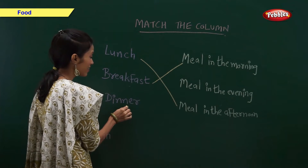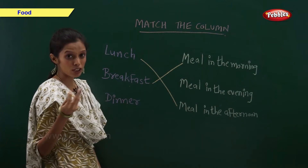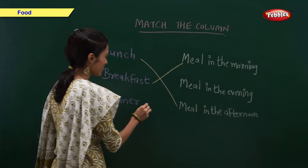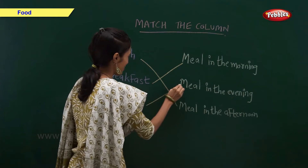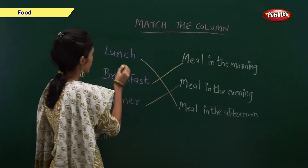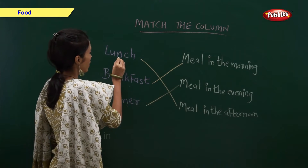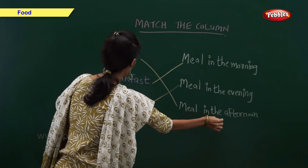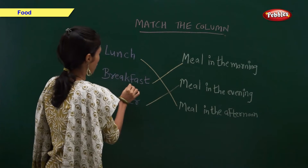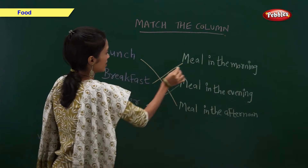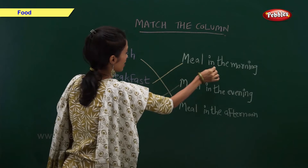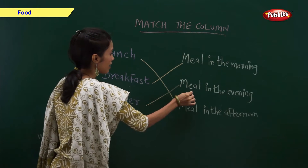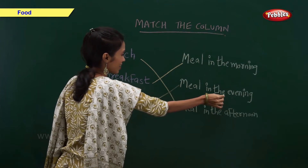And dinner. When do we take dinner? Yes, in the evening. So, lunch is the meal in the afternoon. Breakfast is the meal in the morning. And dinner is the meal in the evening.